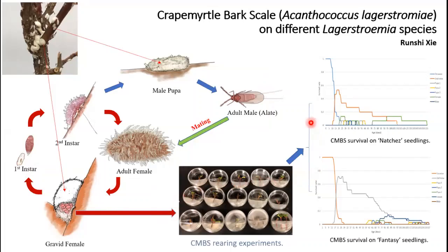As you can see in the graph here, the survival curves of these scale insects are actually quite different on different microstromia species or cultivars. Therefore, based on the biological and ecological data collected in this study, better strategies can be developed to control these scale insects in the future. Thank you.